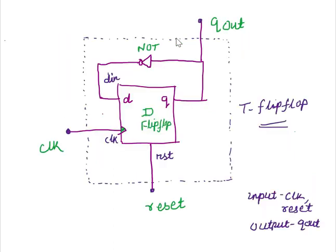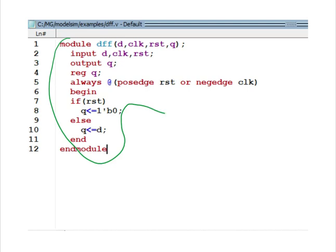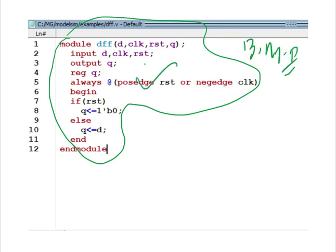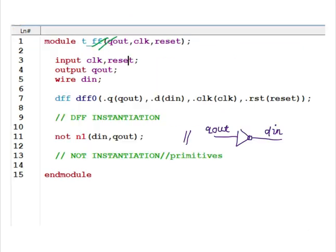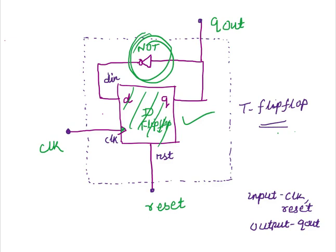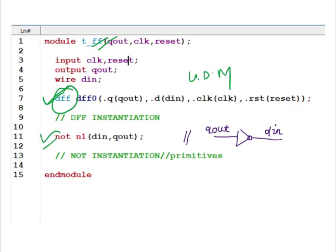For example, consider this T flip-flop, which contains a D flip-flop and a NOR gate. First, you write the Verilog code for the D flip-flop using behavioral modeling technique. Then, inside the T flip-flop, you instantiate this D flip-flop — that is the user-defined module. There is also a NOR gate, which is written as a primitive. So here we have one user-defined module instantiated along with a primitive, and this is structural modeling technique.